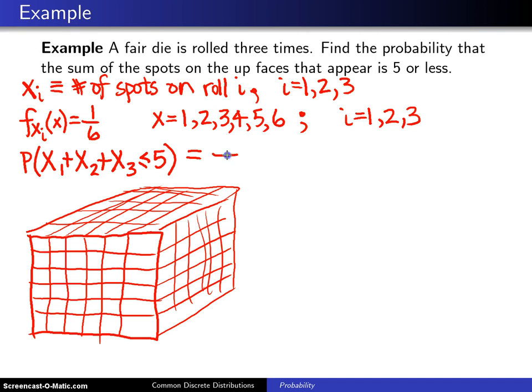So we know, since six to the third is 216 outcomes, that there are 216 equally likely outcomes for the sum, and all we have to do is figure out how many of those outcomes correspond to being five or less.